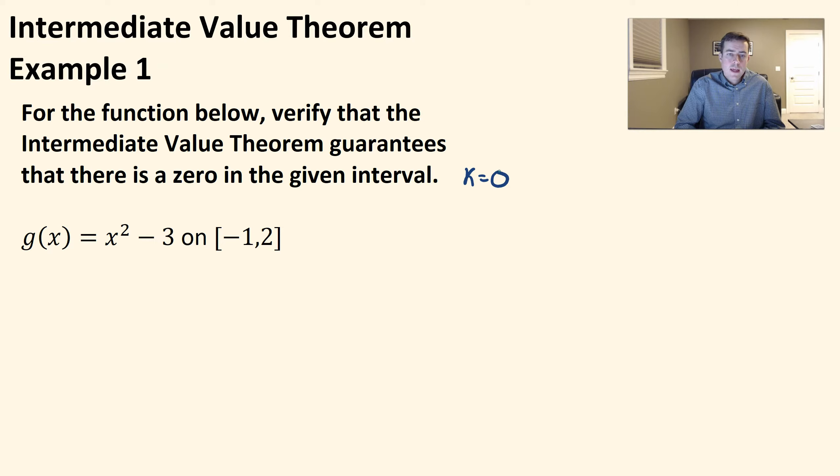Remember what the intermediate value theorem says. First off, we have to make sure we're continuous on that interval. We have a quadratic here, which is a polynomial, and any polynomial is always going to be a continuous function. So that meets our first condition.